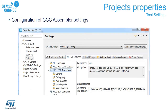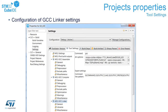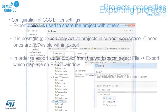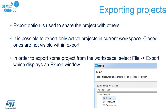In Tool Settings you can configure the assembler, C compiler, and linker used to build your application. This is where you specify the optimization level, additional preprocessor definitions, additional include paths, and other components used by the compiler, linker, or assembler. To share a project with others or store it in an external repository, use the export option — go to File > Export.